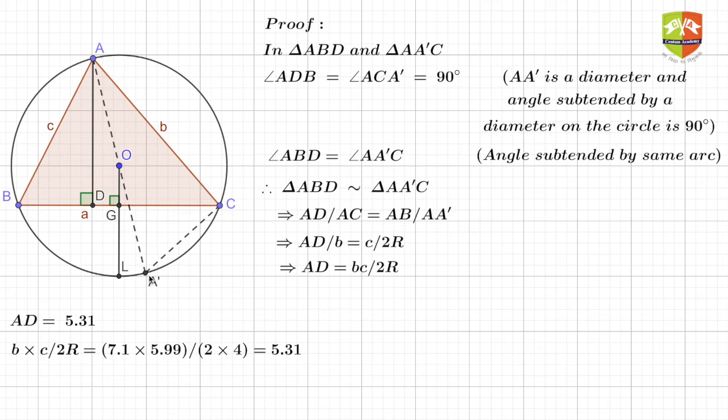So hence these two angles are also equal. So if these two angles are equal, then what happens? The two triangles will be similar by AA criteria, AA similarity criteria. Hence their corresponding sides must be proportional.